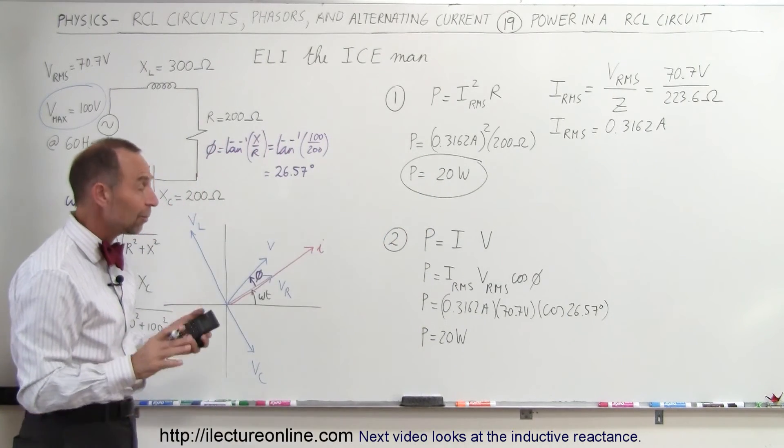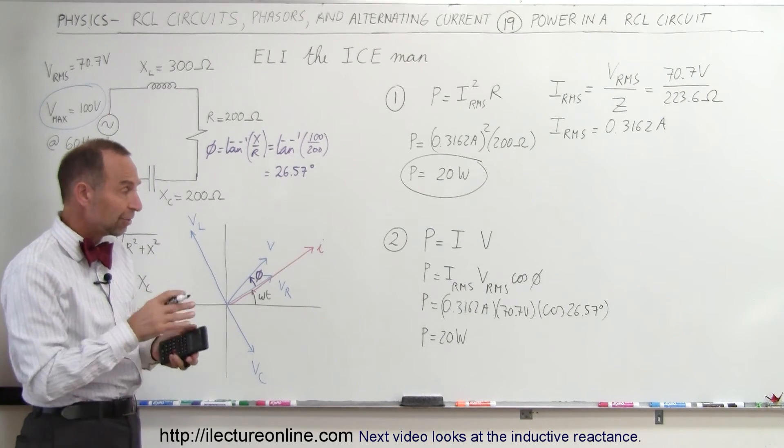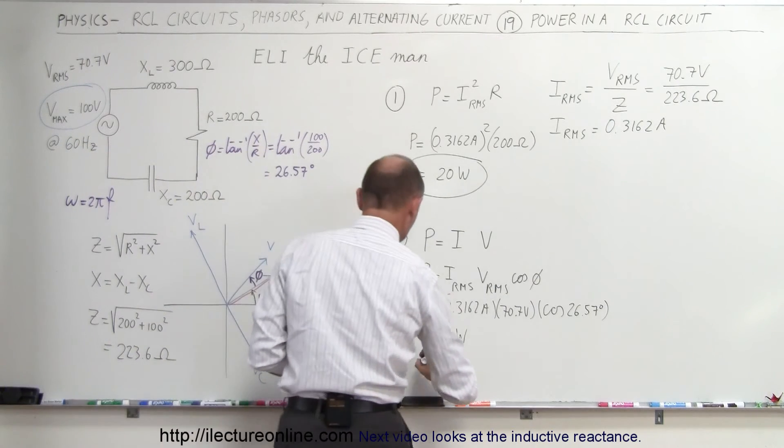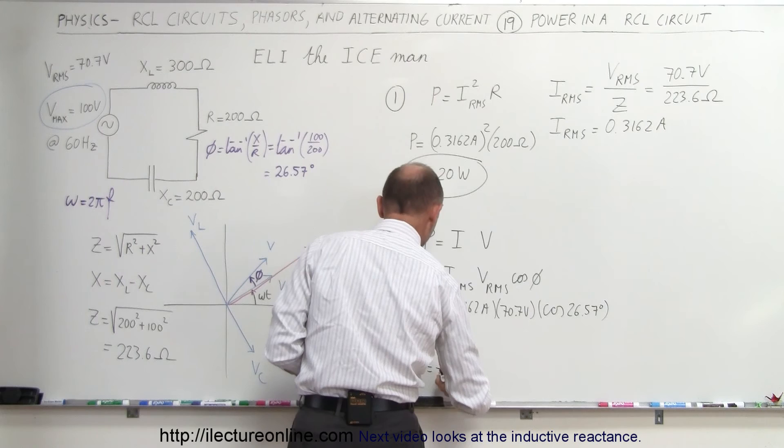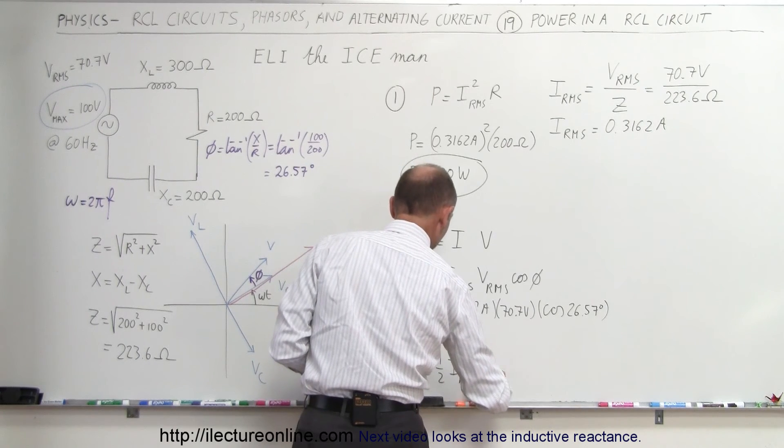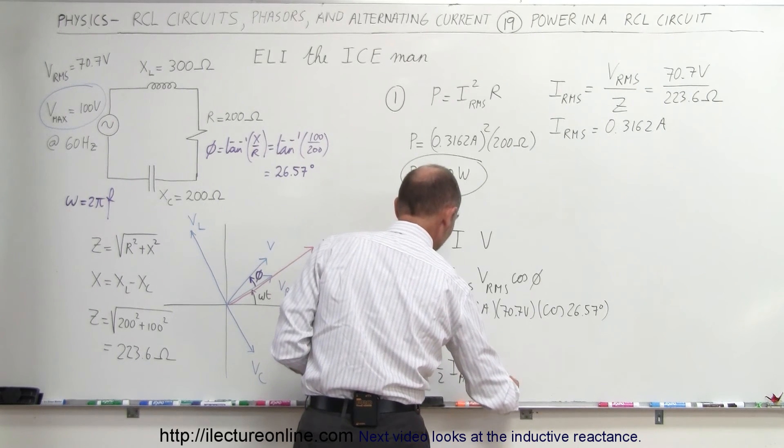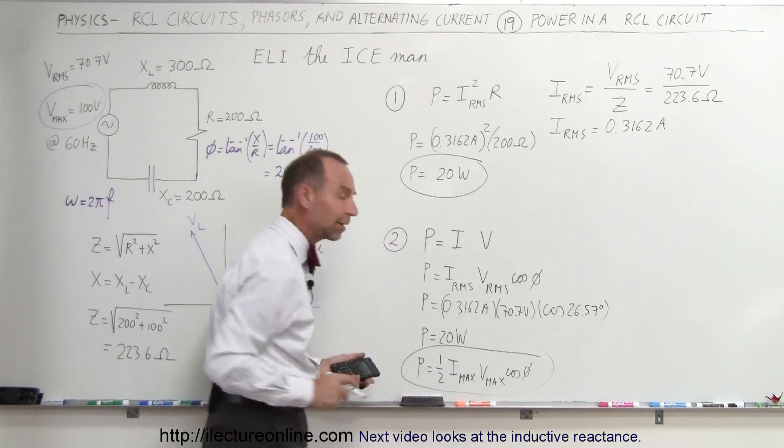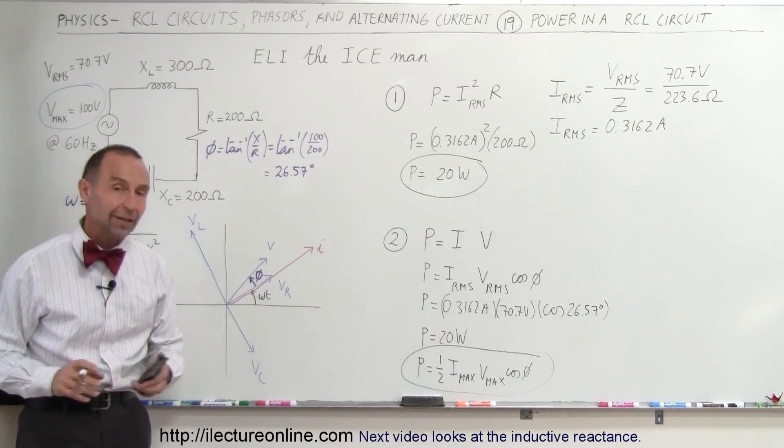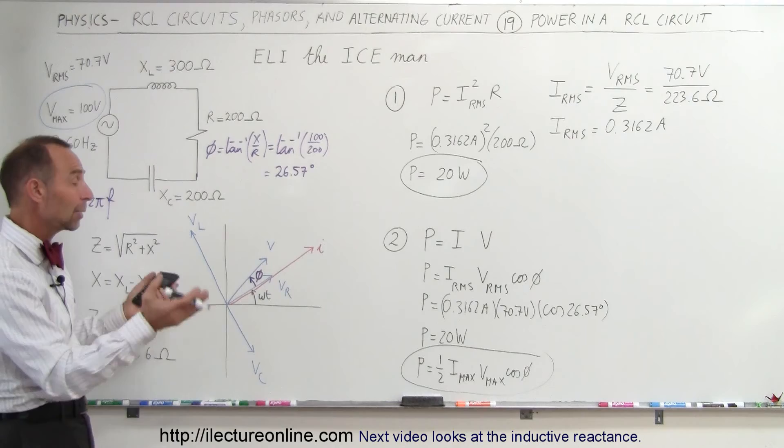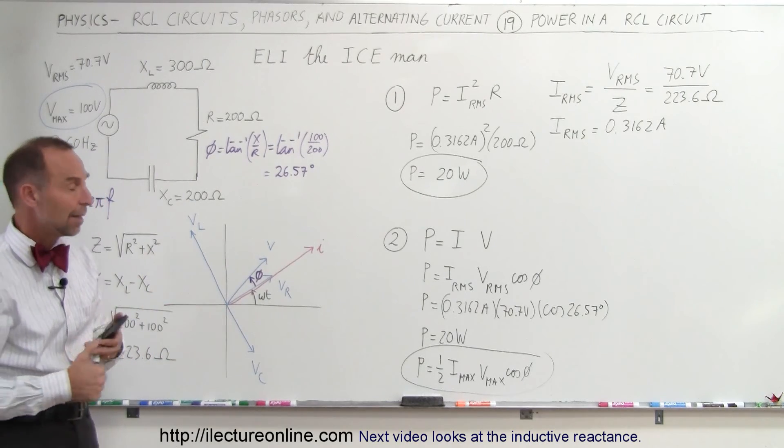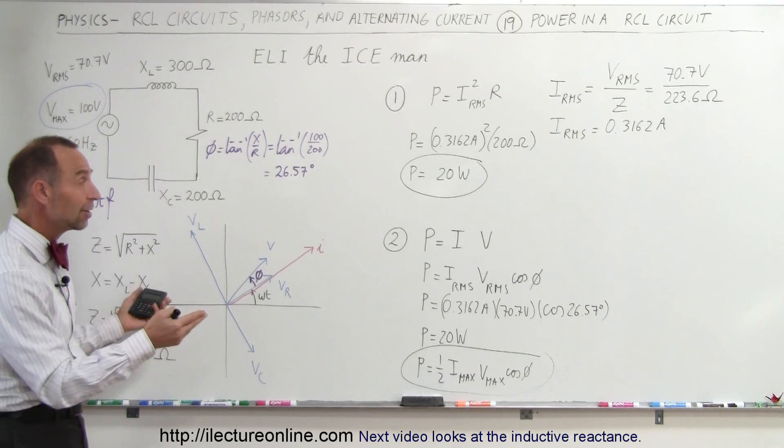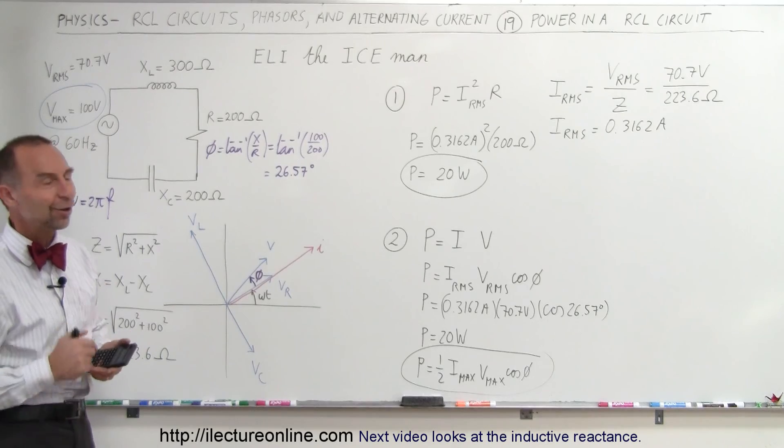Now, it turns out that sometimes instead of using an RMS current and an RMS voltage, we can use a maximum voltage. But remember that we have to adjust for that, so we can also say that the power is equal to one-half Imax times Vmax times the cosine of the phase angle. So if you only have the maximum value of the current and voltage, you can also find the power consumed in the circuit, but then you have to multiply that by one-half to compensate for the difference between the maximum value of the current and voltage and the RMS value of the current and voltage. But that's how you calculate the power consumed in an RCL circuit.